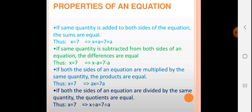Third: if both sides of an equation are multiplied by the same quantity, the products are equal. So if x = 7, then a × x = 7 × a. Fourth: if both sides of an equation are divided by the same quantity, the quotients are equal. That means if x = 7, then x ÷ a = 7 ÷ a.